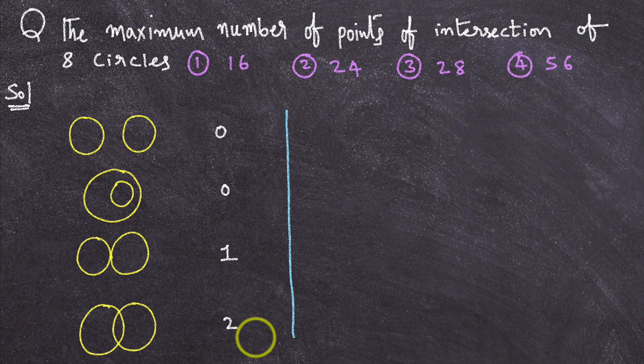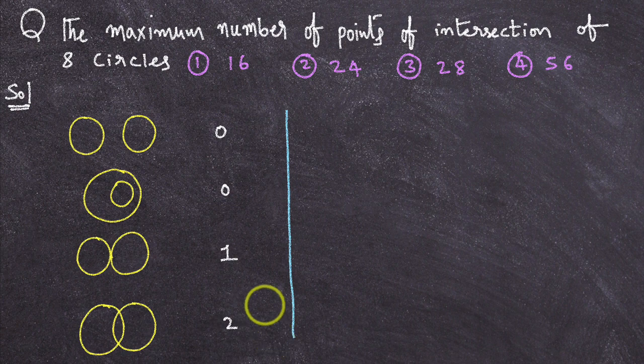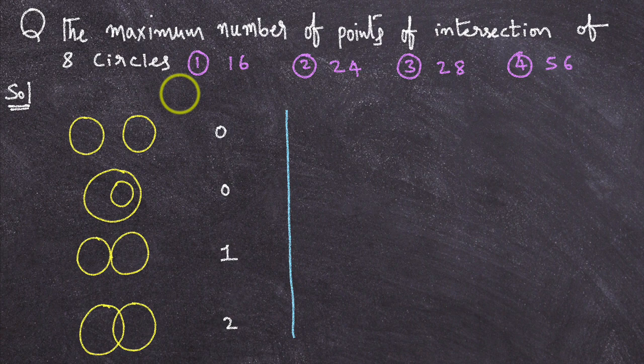When you consider 2 circles, maximum number of points of intersection are 2. So here, if they give 8 circles to you, what are maximum number of points of intersection of 8 circles?